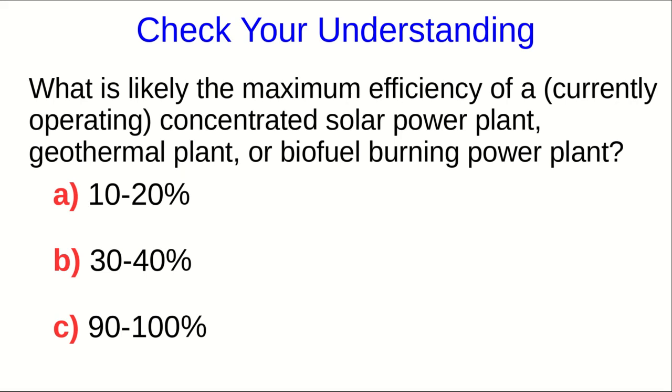This was the question I asked you at the end of the previous part of the lecture. The point here is that all three of these sorts of plants are using heat engines, and we've seen in fossil fuel-based plants using heat engines that they can achieve around about 40%, and so the answer here is 30 to 40%.